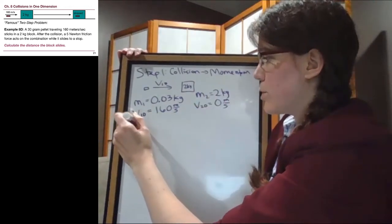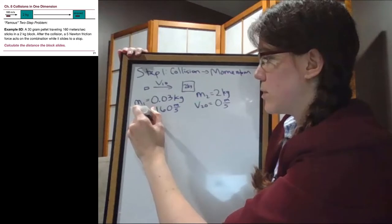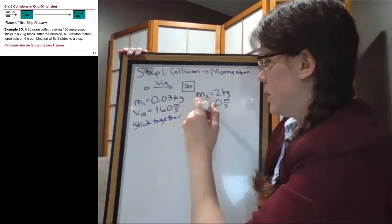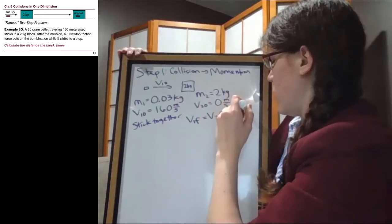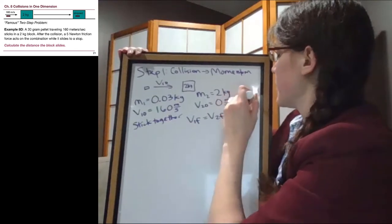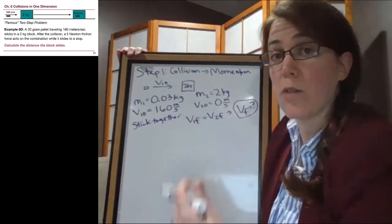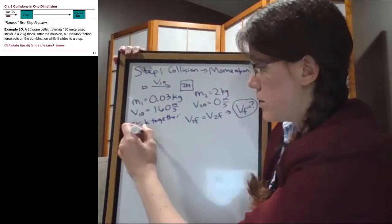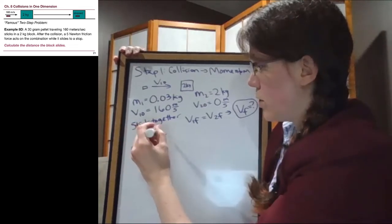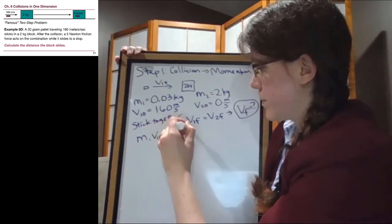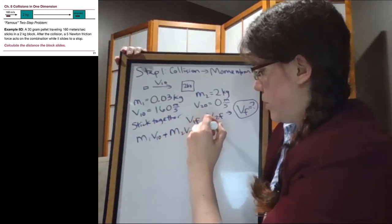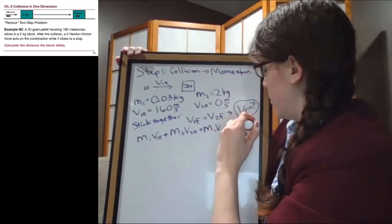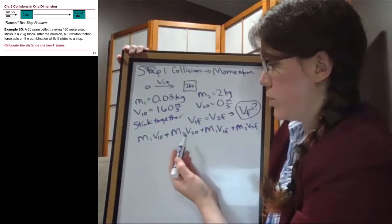The second mass is two kilograms, it's initially not moving at all - it's at rest. And then they stick together, which means that v1 final is equal to v2 final, and so we can just call that whole thing v final. That's what we're trying to find: the final velocity of the collision. So we use our collision tool which is the momentum conservation equation.